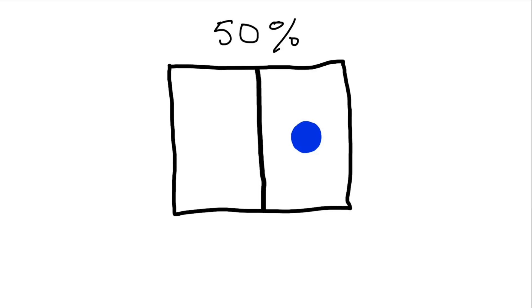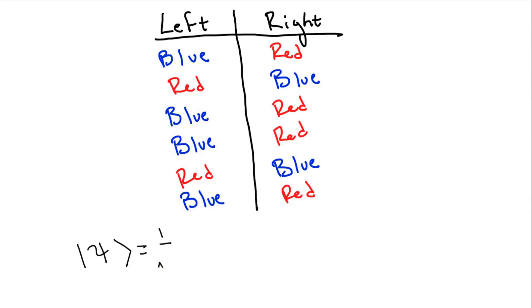So, this is truly entanglement, because I can't separate the states of the ball on the left and the ball on the right. I have to talk about the state of the whole system. Put more mathematically, the total wave function of the system can only be described as a linear combination of states such that I can't decompose it into a wave function for the ball on the right times a wave function for the ball on the left.